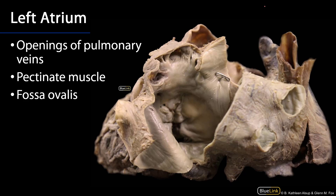Looking at the left ventricle, the best view is going to be from the posterior. This is the base of the heart, which has been incised. We can see some very lovely pulmonary veins there — these are delivering oxygen-rich blood back to the heart from the lungs. Here we can see a little bit of that left auricle and within it some of the pectinate muscle.